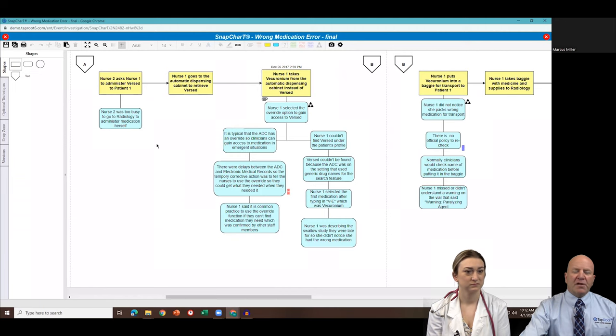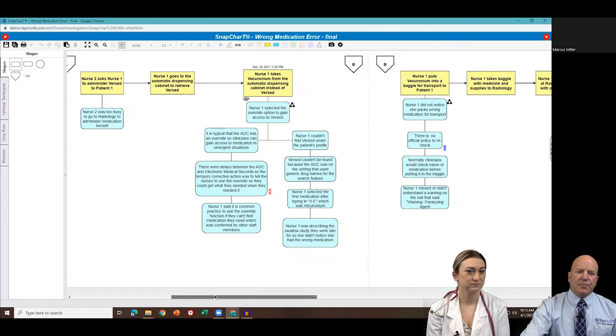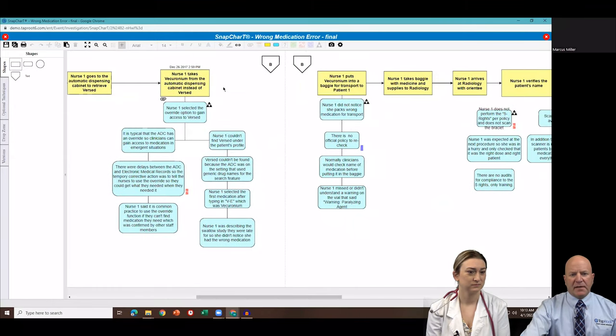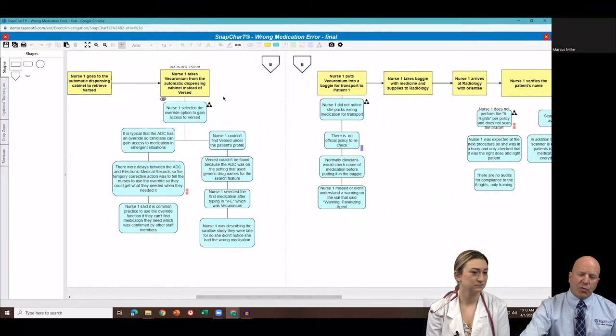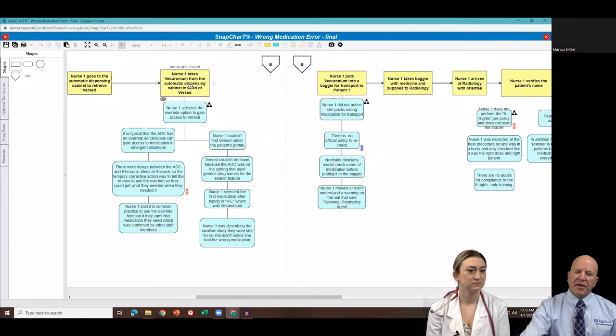So she goes to the automatic dispensing cabinet to get Versed. Now this is where things get a little wonky. So she goes to the cabinet and she pulls out the wrong medication. Now how did that happen? So reading through CMS's report and knowing what we know from the trial, she couldn't gain access to Versed at first. So she hits the override right here.